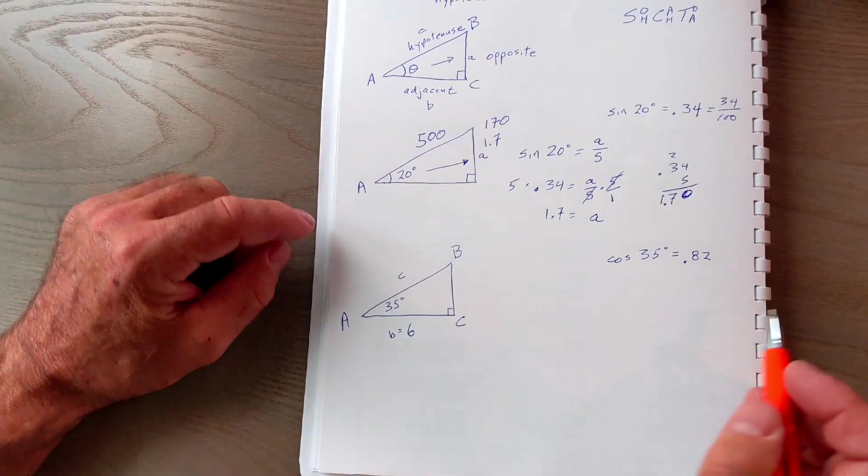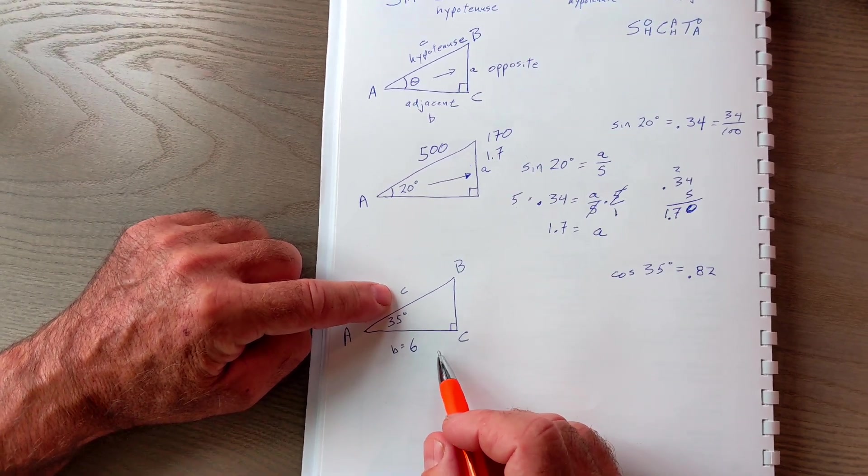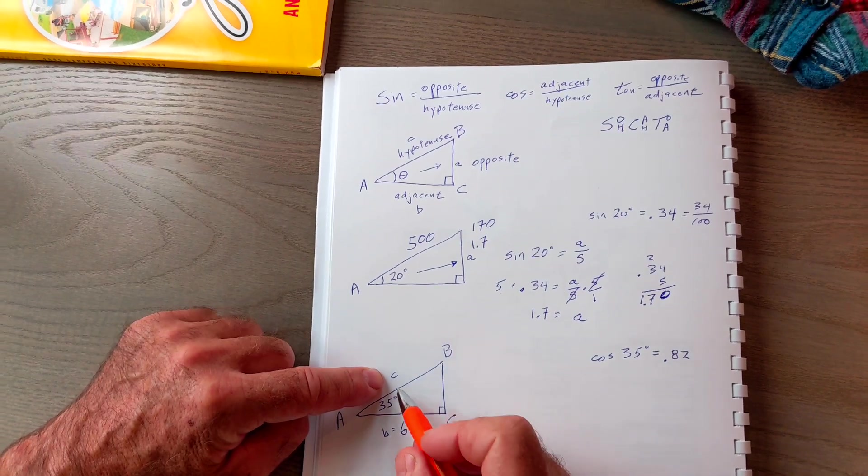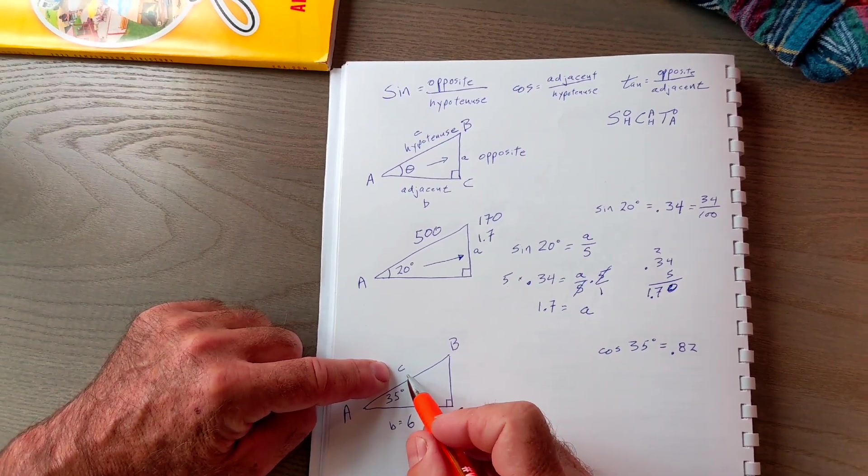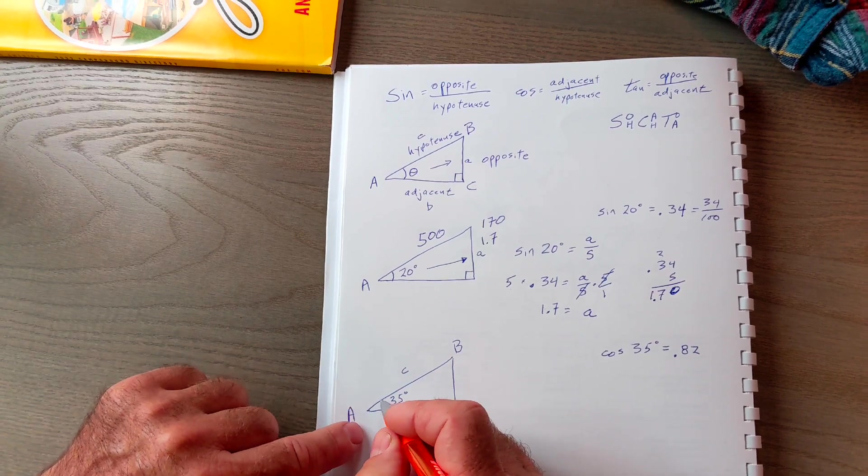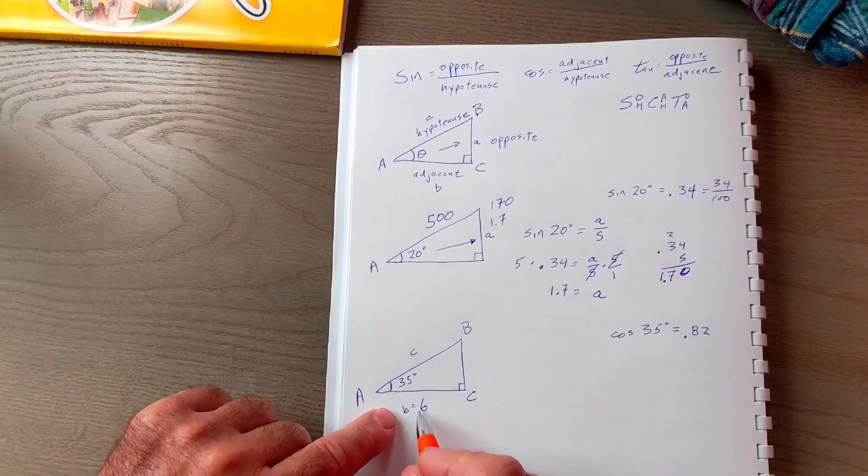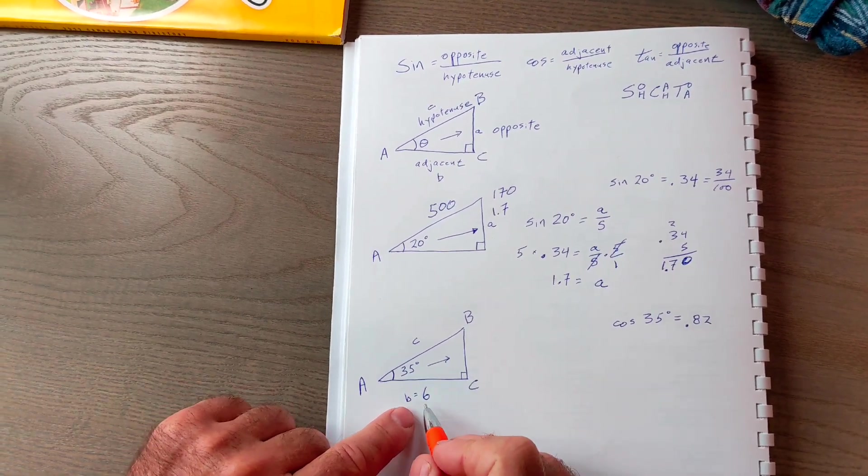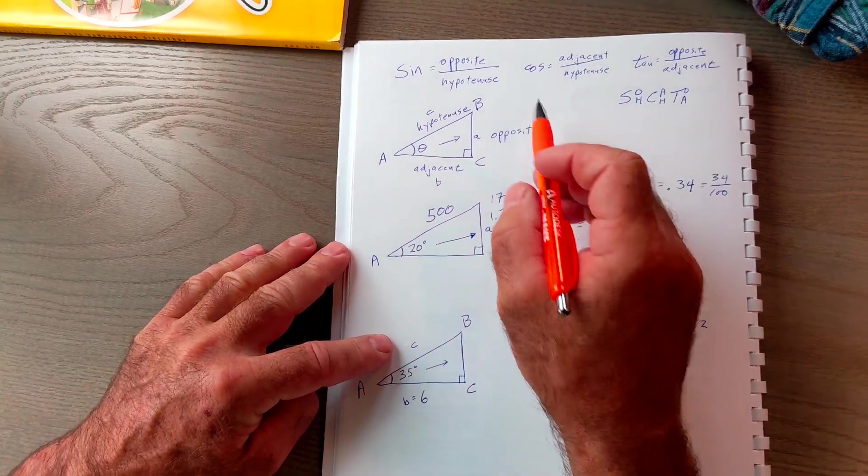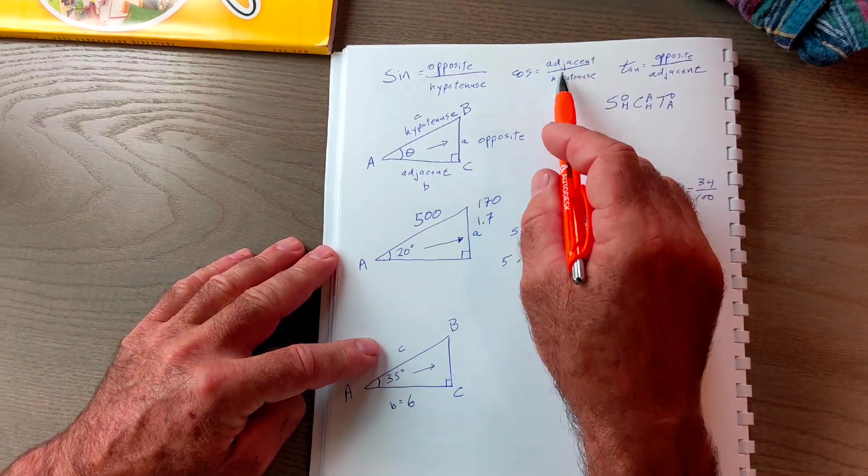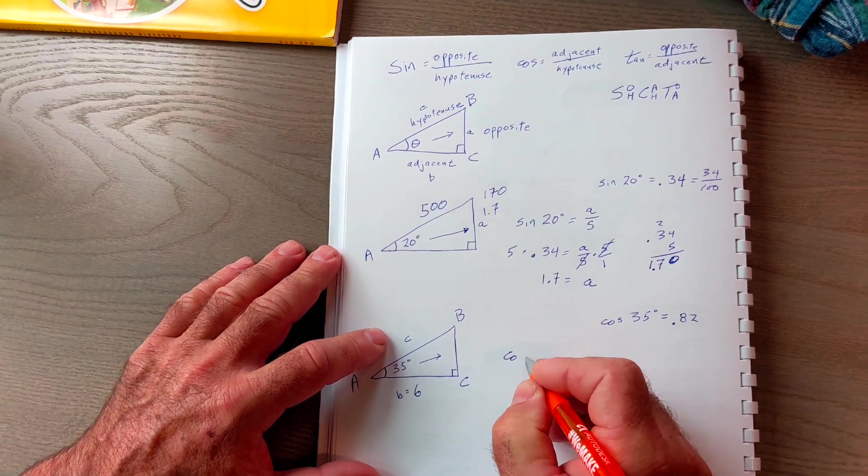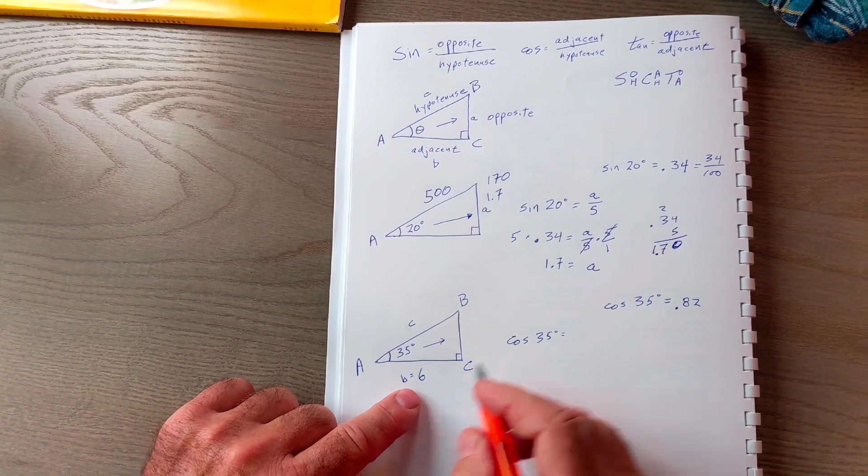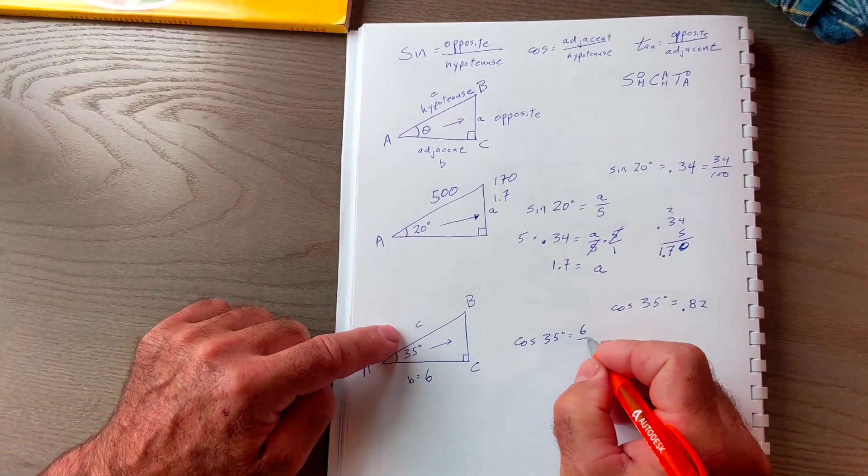Let's do one more. So here I'm looking for side C. That's my hypotenuse. See if you could set this up, pause the video and do this problem before I do it. C is my hypotenuse. I'm looking for that. I'm talking about this angle here. This leg is adjacent to it because it touches it. That's what adjacent means. This leg is opposite to it, but I have the adjacent leg. I'm looking for the hypotenuse. I go up here. Adjacent hypotenuse, that's going to be cosine. So cosine of 35 degrees is equal to my adjacent leg, 6, over my hypotenuse, C.